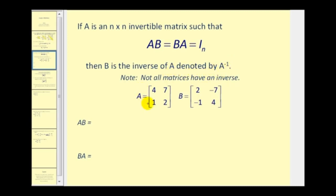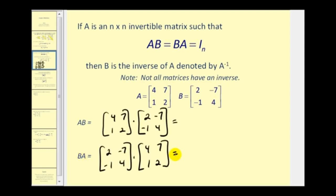Let's take a look at what happens when we find the product of these two matrices — first A times B, and then B times A. Remember, usually matrix multiplication is not commutative, but let's go ahead and see what happens in this case.